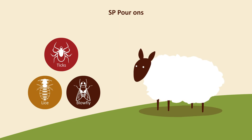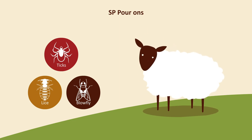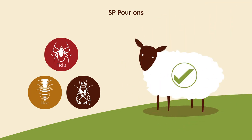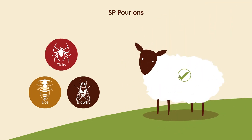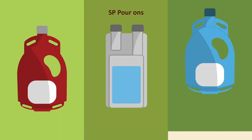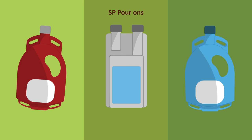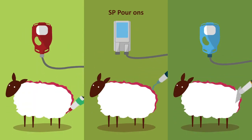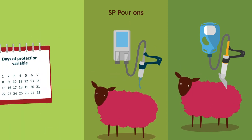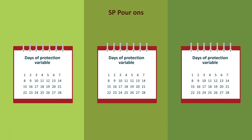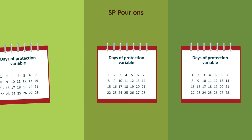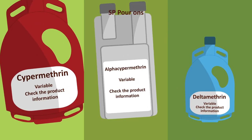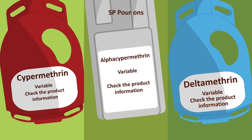SP pourons will kill lice, ticks and blowfly maggots and prevent ticks and blowfly strike for a period of time. Correct application methods vary between products and can be different for each parasite. Products can also offer varying lengths of protection. Read the product instructions and make sure to use the correct application method for the target parasite.